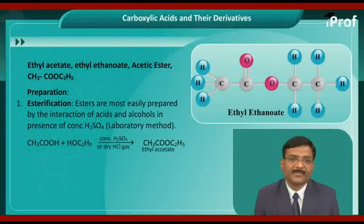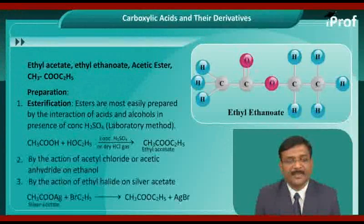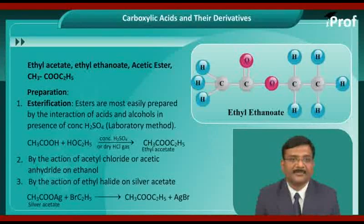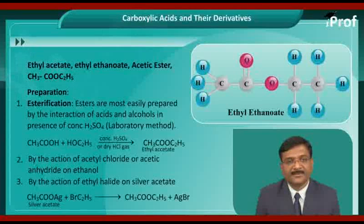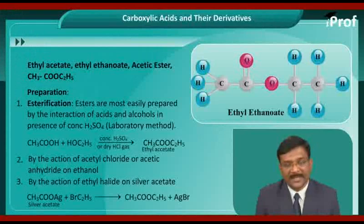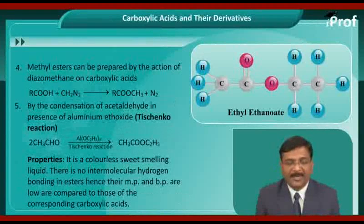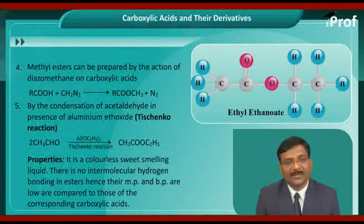Ethyl acetate is also prepared by the action of acid chloride or acid anhydride on ethanol. It can also be prepared by the action of ethyl halide on silver acetate. Methyl esters can be prepared by the action of diazomethane on carboxylic acids.